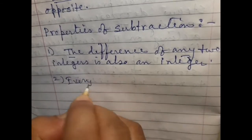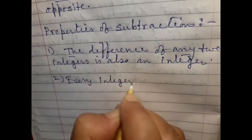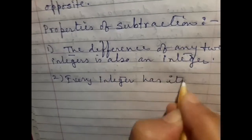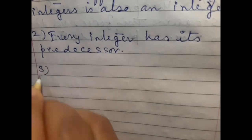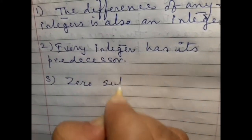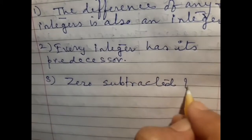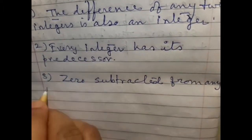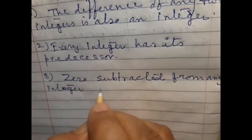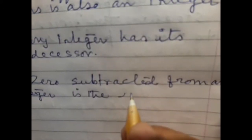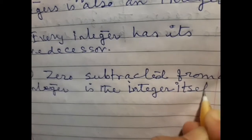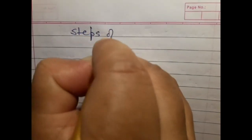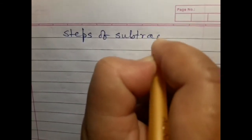Every integer has its predecessor. Number 3: Zero subtracted from any integer is the integer itself. Steps of subtraction.